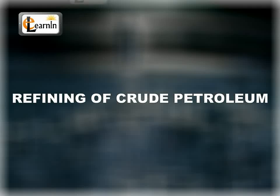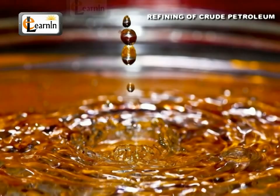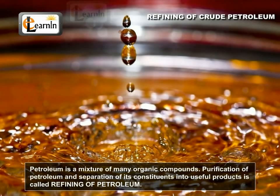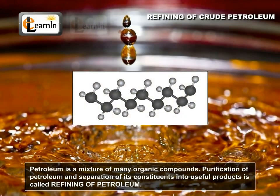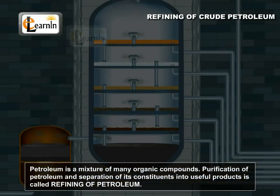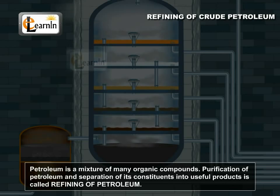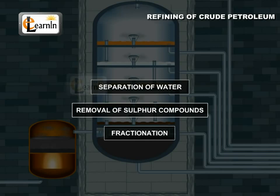Refining of Crude Petroleum. Petroleum is a mixture of many organic compounds. Purification of petroleum and separation of its constituents into useful products is called refining of petroleum. The process of refining involves three steps.